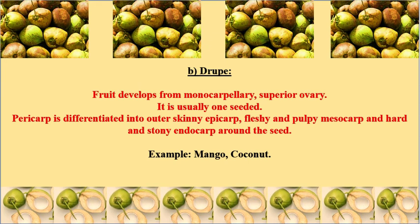The ovule develops into a seed, so the monocarpellary fruit forms only one seed. The pericarp is differentiated into an outer skinny epicarp. In the picture of coconut, you can find the skinny epicarp, the fleshy and pulpy mesocarp, and the endocarp which is hard and stony, surrounding the seed.